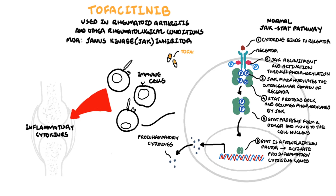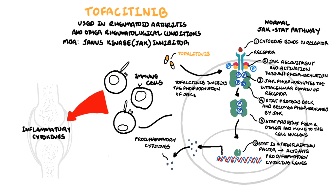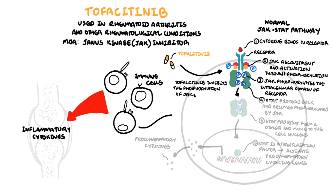Tofacitinib is a Janus kinase inhibitor, a JAK inhibitor. It inhibits the phosphorylation of JAK, which essentially inhibits the JAK-STAT phosphorylation pathway. The inhibition of the JAK-STAT pathway means reduced pro-inflammatory cytokine production and so a reduced inflammatory response in joints and other tissues.